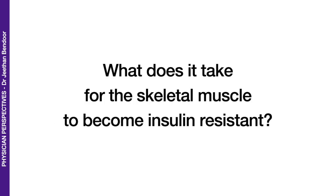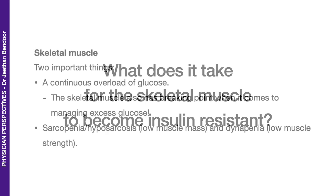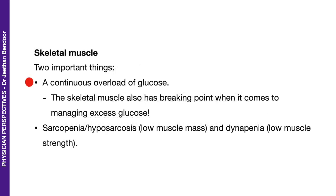So what does it take to make the skeletal muscle become insulin resistant? Two important things in my opinion. First, a continuous overload of glucose — the skeletal muscle also has a breaking point when it comes to managing excess glucose, so there is always hyperinsulinemia to bring down that glucose. The second most important thing is sarcopenia, or what I would like to call hyposarcosis, where there is low muscle mass, and dynapenia, that is low muscle strength. So: overload of glucose, hyposarcosis, and dynapenia.